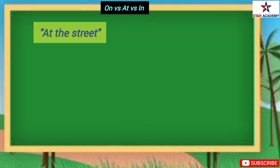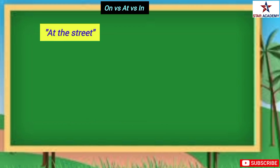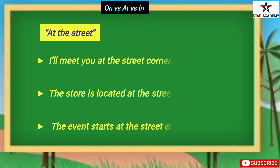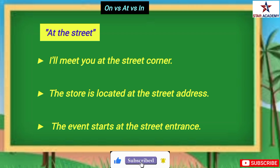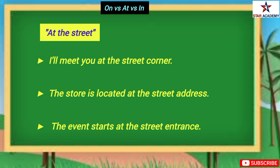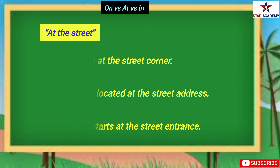Now let's look at some examples of 'at the street'. 'I will meet you at the street corner' means you will meet me at the edge or boundary of the street, at the corner. 'The store is located at the street address' means the store is present at a specific point on the street. 'The event starts at the street entrance' means the event begins at the edge or boundary of the street, at the entrance.